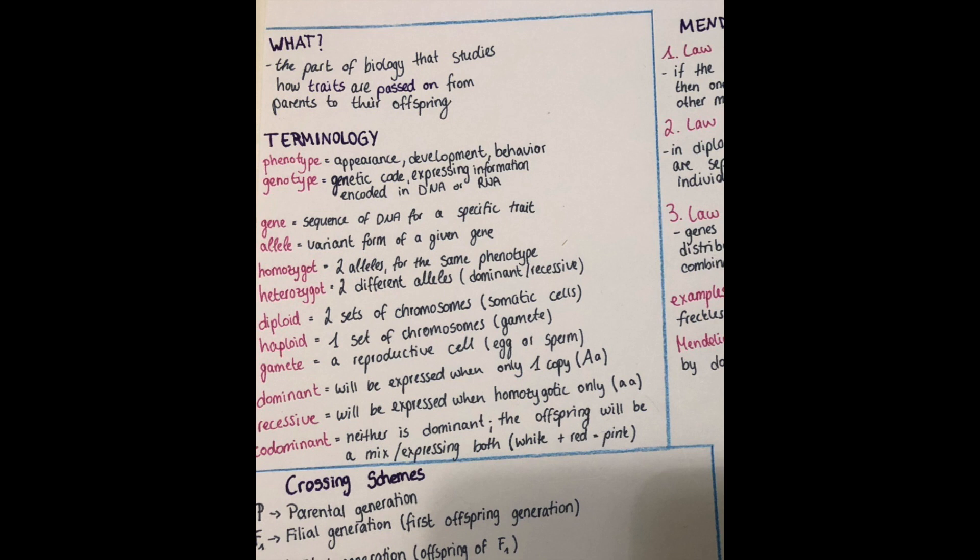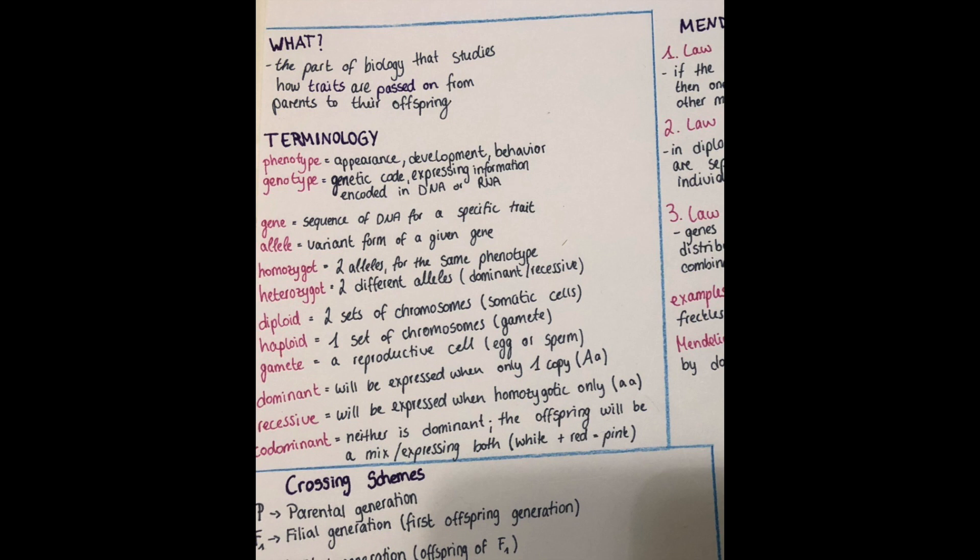Now we will come to the Mendelian laws. Those are also often taught in school or in university. And Mendel was a monk who was studying pea plants and their different characteristics. But that's another topic. Maybe I make a video about this also. There are three Mendelian laws which I will explain now one by one.